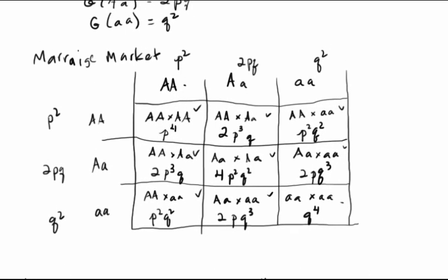Now I want you to think about how non-random mating affects the outcome of this mating scenario. We're going to tweak this such that the likelihoods of these matings are not necessarily going to be the same. We're not saying this is natural selection — don't confuse non-random mating with natural selection. Selection requires that some individuals have higher fitnesses. We're saying that no matter what your genotype is, you're mating; it's just that instead of mating at random, you're going to be mating in some non-random way.